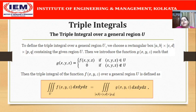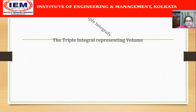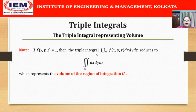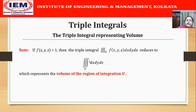Let us now see what this kind of triple integral can physically represent. If the function f(x,y,z) = 1, then the triple integral reduces to the special triple integral ∭dx dy dz over region u. We can easily observe that this represents the volume of the region of integration u, because dx, dy, dz are elementary lengths in x, y, z directions — so their product dx dy dz gives the volume of an elementary region. Adding up these elementary regions over the entire region u gives the volume of the entire region of integration u.